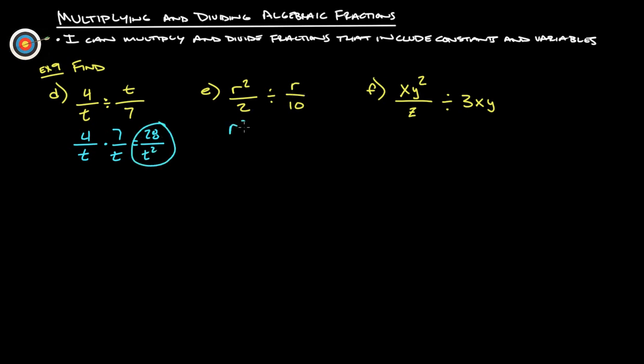This one here, r squared over 2, we're going to now multiply by 10 over r. So we have 10 r squared over 2 r. Now both of these will actually simplify. 10 over 2 is 5. And we have r squared over r to the first. That's two r's on the top, one on the bottom. So one of the r's simplifies to 1 and we're left with the other r. So that just simplifies. 2 minus 1 is 1. 5 r to the first.